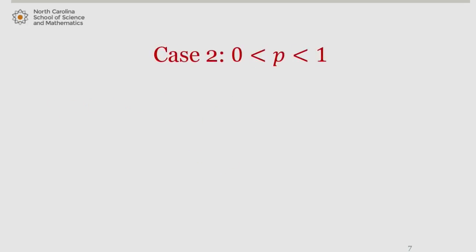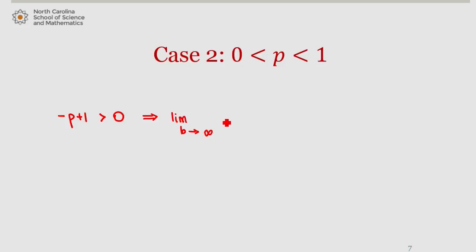Now suppose that p is between 0 and 1. If so, then negative p plus 1 is greater than 0, which tells us that the limit as b approaches infinity of b to the negative p plus 1 is equal to infinity. So the integral in this case must diverge. According to the integral test, this tells us that the series diverges as well.